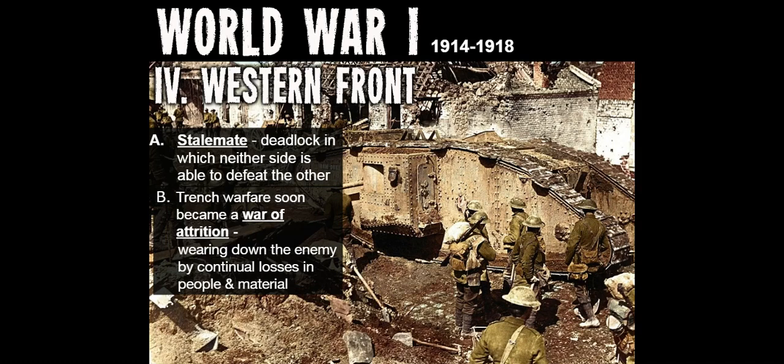The space between opposing trenches earned the grim name 'no man's land.' When officers ordered an attack, their men went over the top of the trenches into that bombed-out landscape, where they usually met murderous rounds of machine gun fire. Staying put, however, did not ensure one's safety — artillery fire brought death right into the trenches. The western front had become a terrain of death, stretching almost 500 miles from the North Sea to the Swiss border.